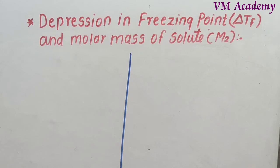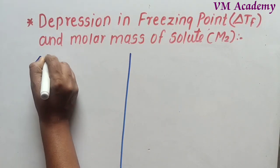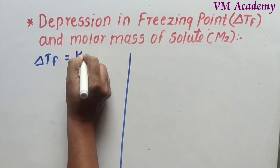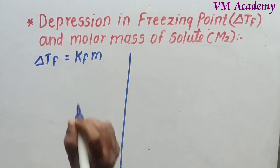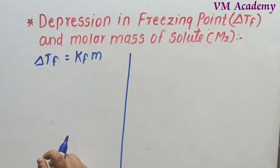Now let's see the relation between depression in freezing point and the molar mass of solute, denoted M2. The freezing point depression delta TF is directly proportional to the molality of the solution, so delta TF equals KF × m. We also know that number of moles equals mass divided by molar mass.